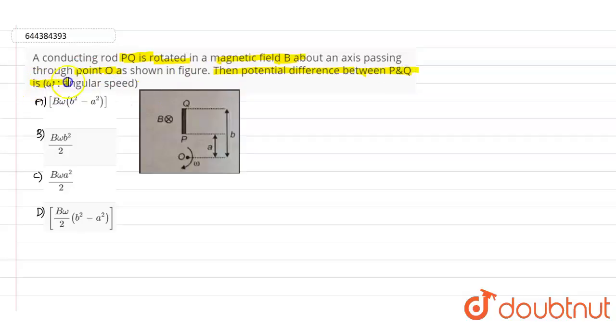According to the given data, if you look into this particular diagram, P and Q is a conducting rod. This is moved into the magnetic field B. This is rotating in the magnetic field angularly from the point O.